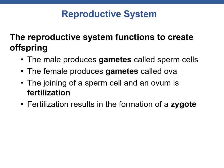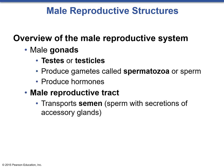The reproductive system functions to create offspring. The male produces gametes called sperm cells or spermatozoa. The female produces gametes called the ova, more commonly known as the egg. The joining of a sperm cell and an ovum is called fertilization, which results in the formation of a zygote. In the male reproductive system, the gonads are the testes or testicles. They produce gametes called spermatozoa or sperm, and they also produce hormones, most notably testosterone.